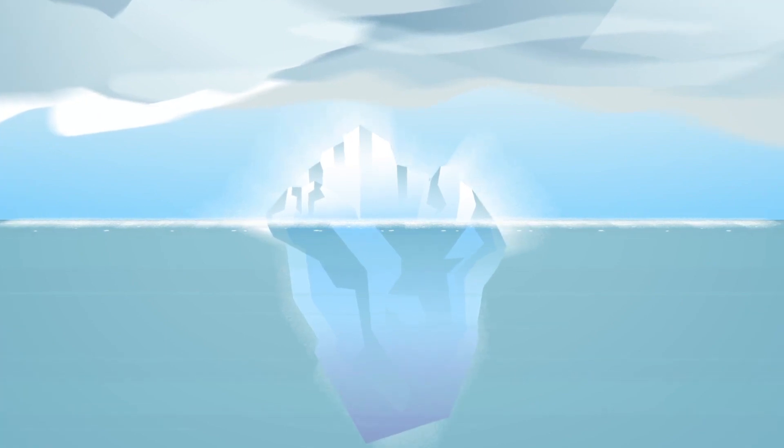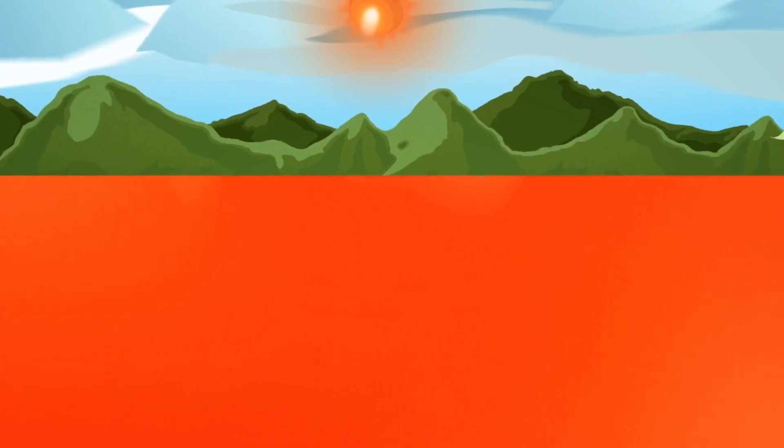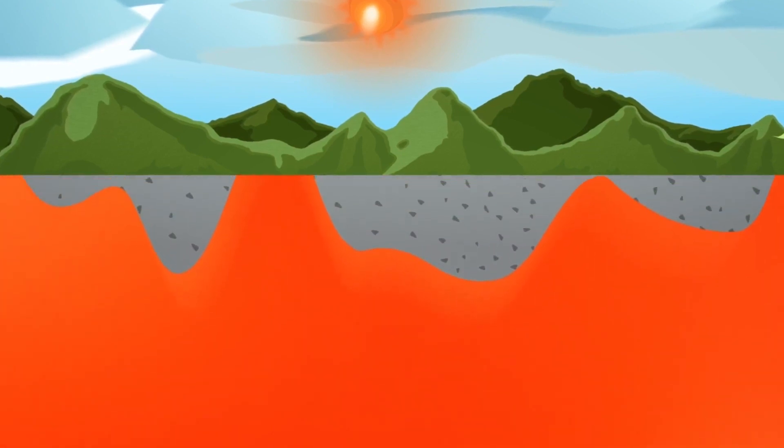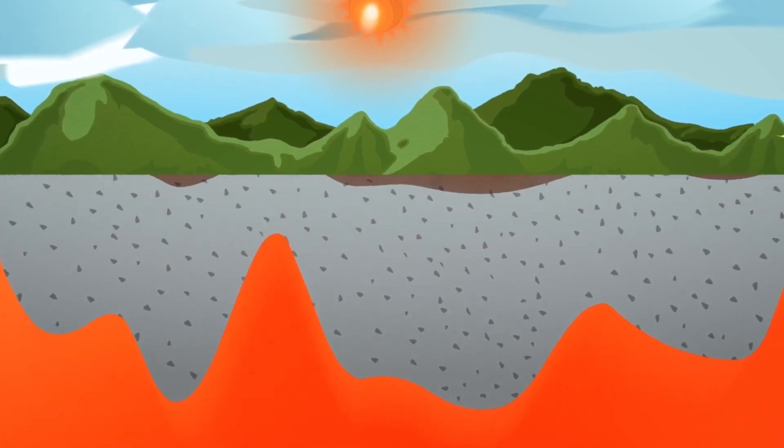Like an iceberg, the lithosphere we see at the Earth's surface is a fraction of what exists. Some blocks of lithosphere have existed since almost the beginning of Earth's history.